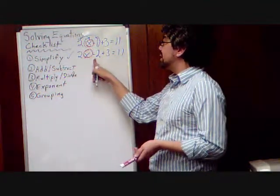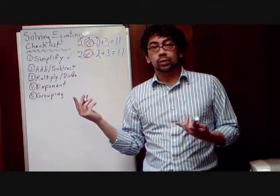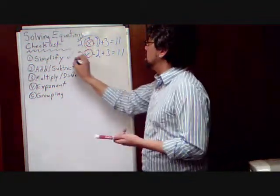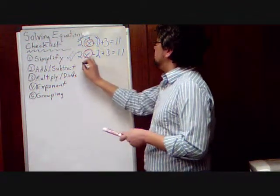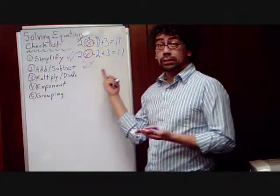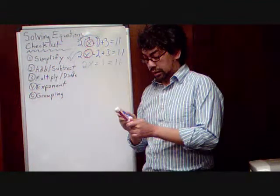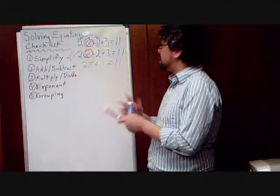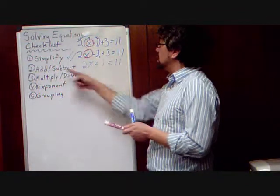No, we still have this negative 2 plus 3 we need to simplify. You're going to find that some of these steps we're not going to just do once. We actually need to simplify again. So, 2x minus 2 plus 3. Negative 2 plus 3 is positive 1. Now, I'm done simplifying. Nothing to do on this side. Nothing to do on that side.